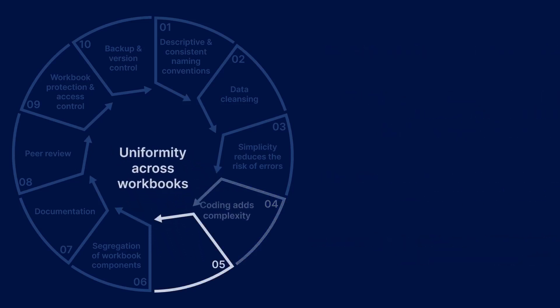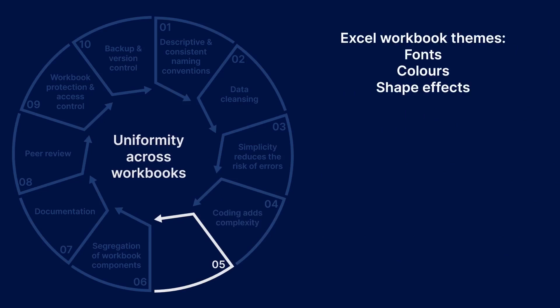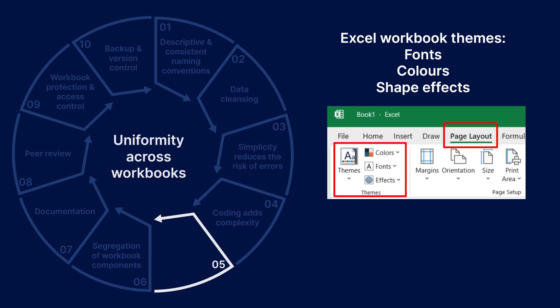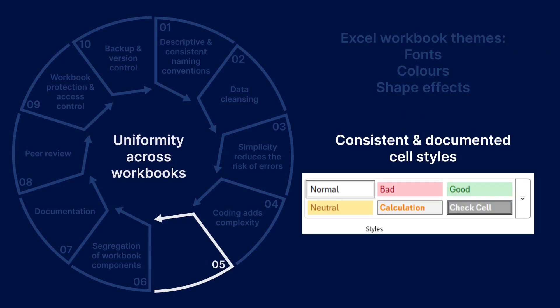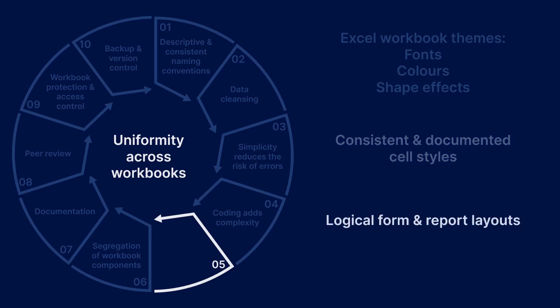Step 5 means you must apply formatting and layout uniformly across all your workbook models to help users understand and interpret them. Use workbook themes, which in Excel consist of fonts, colours and shape effects. Use consistent cell styles and include in each workbook's documentation a guide to the styles used. Use logical layouts for forms and reports, and consider setting up workbook templates if you're regularly creating similar workbooks.